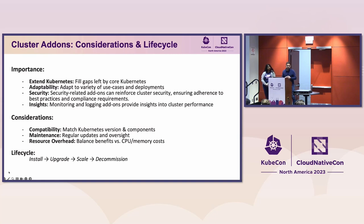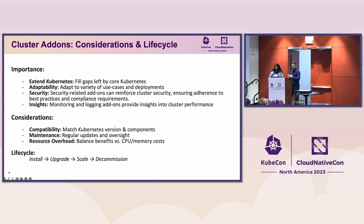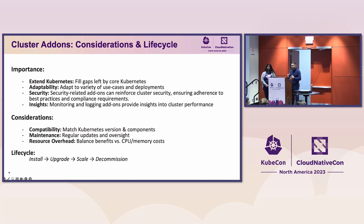When implementing add-ons, there are things to consider. First, compatibility — make sure the add-on is compatible with your version of Kubernetes, and that if two add-ons work together, those versions match. You also want a plan for how you're going to maintain and update these add-ons. Consider resource overhead: how much CPU and memory do you need — how much will it cost? And like any software lifecycle, you install, upgrade, scale, and eventually decommission them.